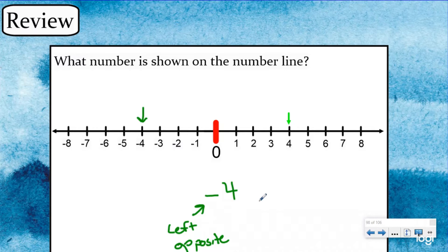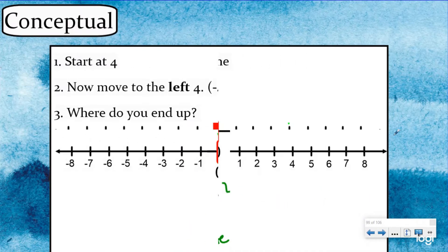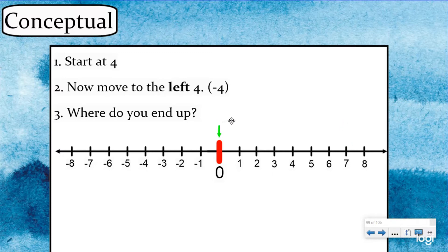But what if we weren't starting at four? What if we changed that? What would this negative sign mean then? Now instead of starting at zero, we're going to start at four. So let's move our arrow four units to the right: one, two, three, four. So now we're starting at four instead of zero. We want to move to the left four — in other words, we want to add a negative four.